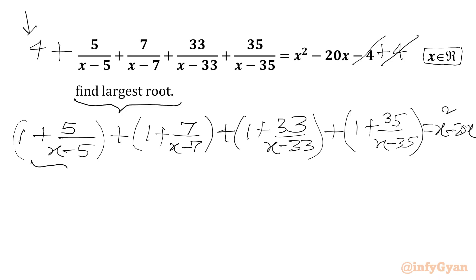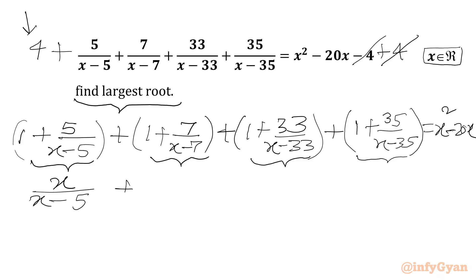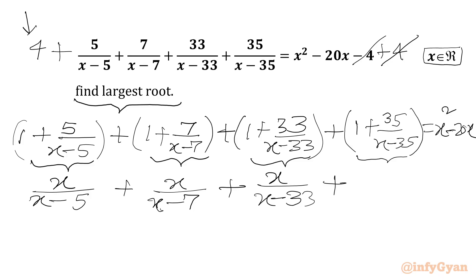Now we are going to take LCM. So I will be writing x minus 5 plus 5 which gives x in the numerator over (x minus 5), plus x minus 7 plus 7 gives x in the numerator over (x minus 7), and so on up to x minus 20. So we will take x common out, and in the bracket we will write x minus 20.